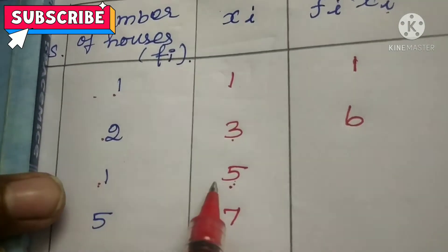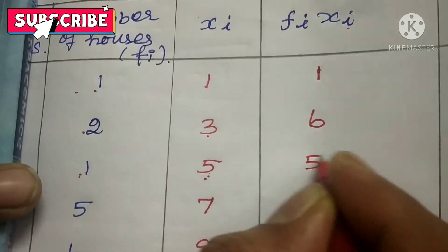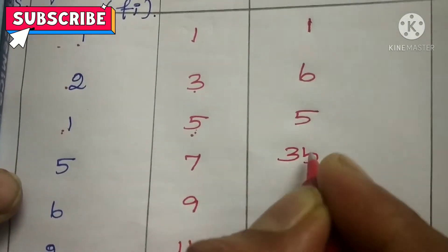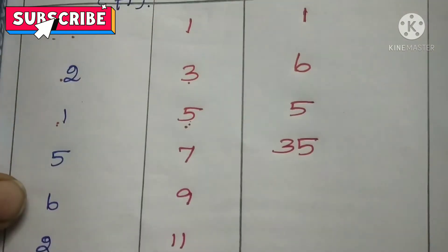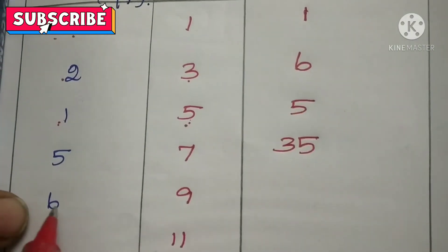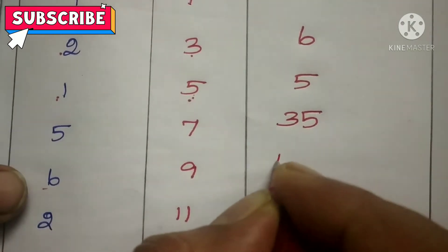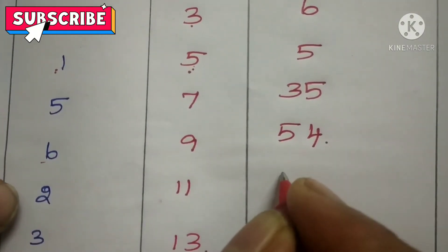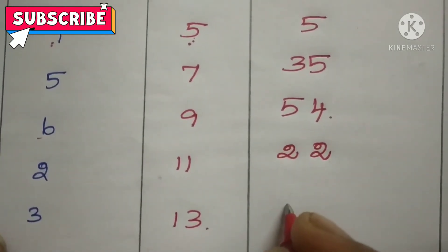1 into 5 is 5. Then 5 into 7 are 35. You have to write it in order so that we can add it. So 6 nines are 54. Then 2 elevens are 22. 3 thirteens are 39.